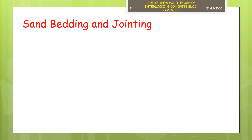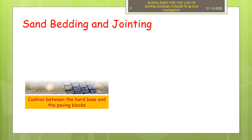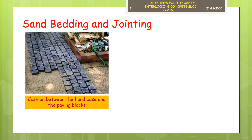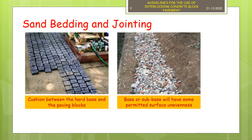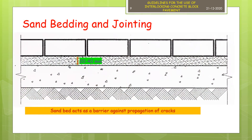A layer of sand bedding is provided between the block and base or subbase for several reasons: to provide a cushion between the hard base and the paving blocks; the base or subbase will have some permitted surface unevenness, and by providing a layer of sand bed the paver block can be leveled perfectly; and the sand bed acts as a barrier and does not allow propagation of cracks formed in base or subbase. A layer thickness of 20 to 40 mm is found to be satisfactory.